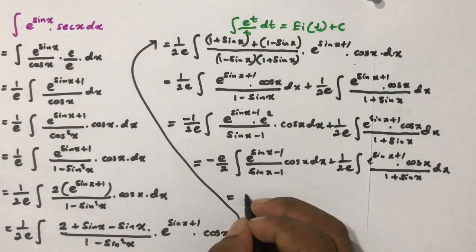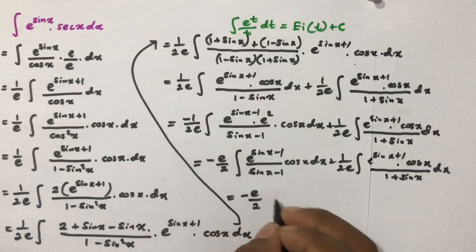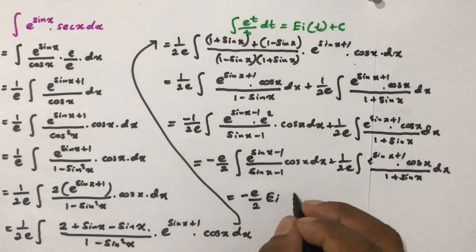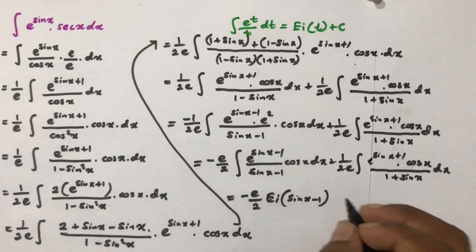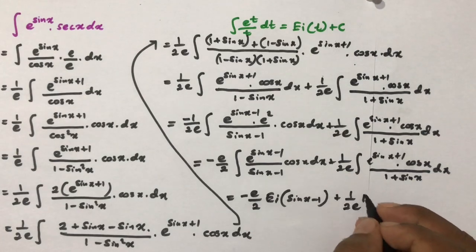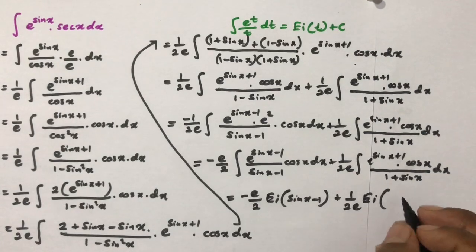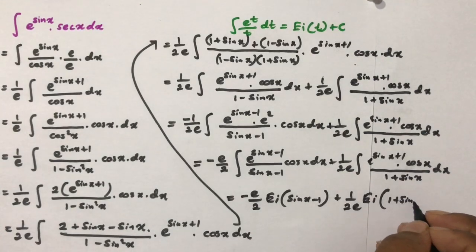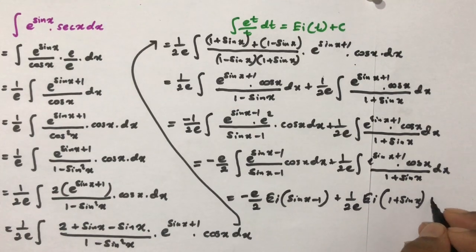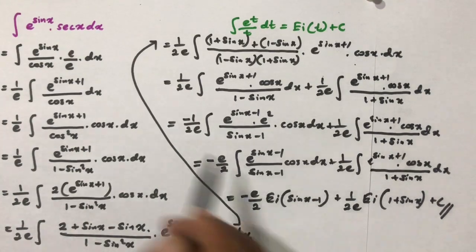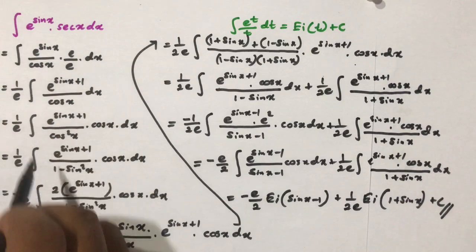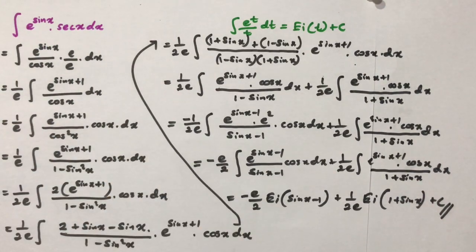Applying the formula, we get: minus e over 2 times Ei(sin x minus 1) plus 1 over 2e times Ei(1 plus sin x) plus C. This is the final answer. Now you can understand why I made this integral so complex — if not, we couldn't solve it. Thank you for watching.